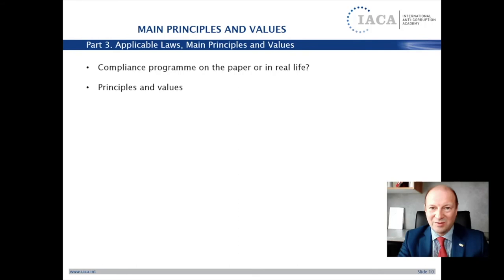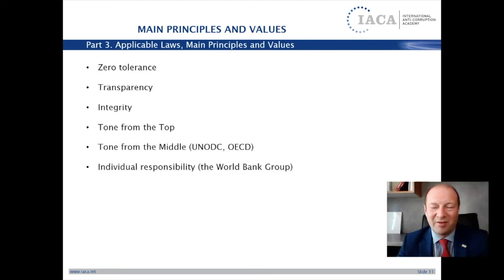The second reason: you need your anti-corruption compliance program not just on paper. This program should be supported by employees and business partners. And in this regard, you have to consider the principles and values in particular countries and particular local communities. Only in this case can your compliance program be successfully implemented and protect your company from corrupt practices. The general anti-corruption compliance standards and guidelines recommend companies to declare in codes of conduct and in anti-corruption compliance programs principles and values that have received global recognition in the corporate world: zero tolerance of corruption, transparency, integrity, and tone from the top.